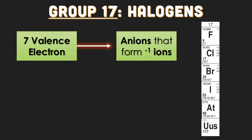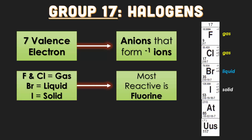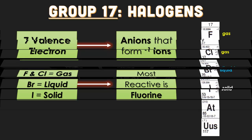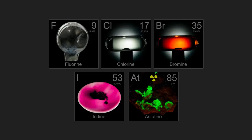Group 17 are the halogens. They have seven valence electrons, and like group 1, they are extremely reactive elements. They are going to form negative one ions, however. Fluorine and chlorine are the gases in the group. Bromine is a liquid, and iodine is the only solid in that group — you have to know that. Fluorine is the most reactive of all these halogen elements. Fluorine and chlorine are both colorless gases. Bromine is a red liquid that gives off a reddish, orangey, yellow hue. Iodine is a purple solid that immediately sublimes. And astatine, which is at the bottom of the group, is a radioactive substance.